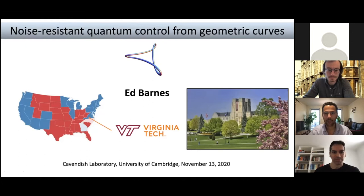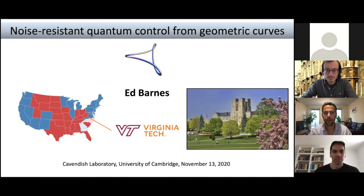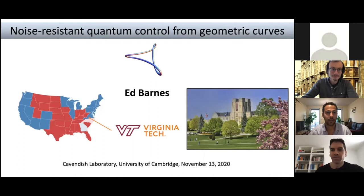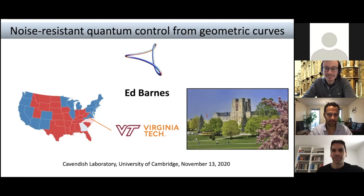Welcome everybody to this slightly later than usual quantum information seminar. Today's speaker is Ed Barnes. Ed got his PhD from the University of California, San Diego, and then went on to do a postdoc at the Condensed Matter Theory Center and the Joint Quantum Institute at the University of Maryland. In 2015, he joined Virginia Tech as a faculty member. Today he's going to talk about how to avoid and get rid of annoying errors in quantum computing. Thanks a lot, Ed, for coming here — the virtual floor is yours.